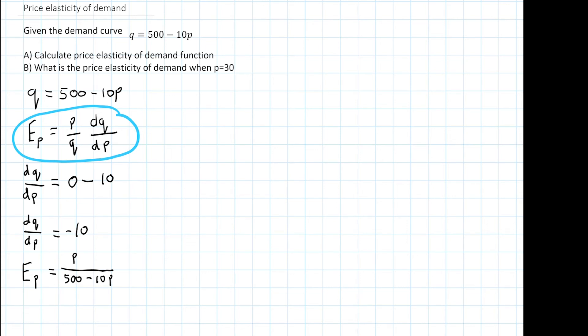And all of this is multiplied by our dq over dp, which of course we just solved and found it was minus 10.